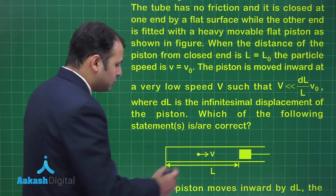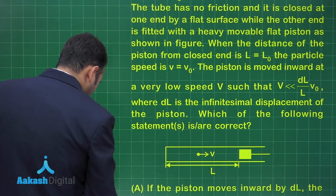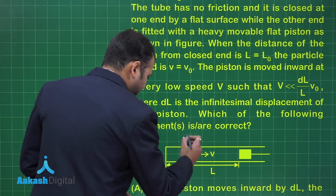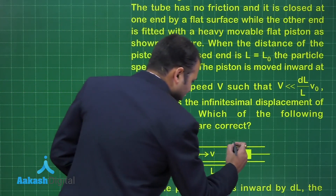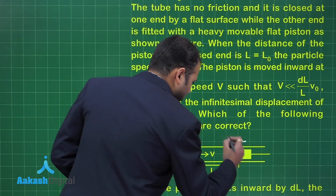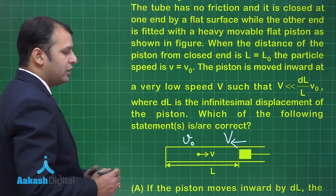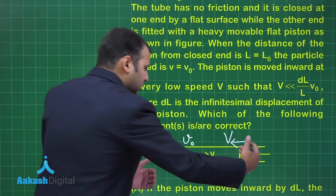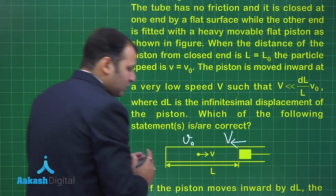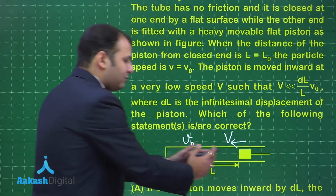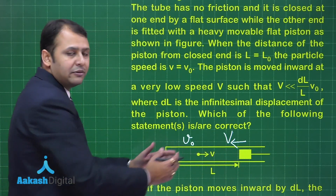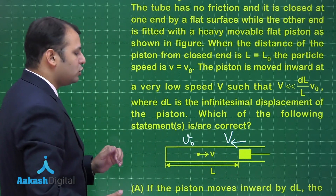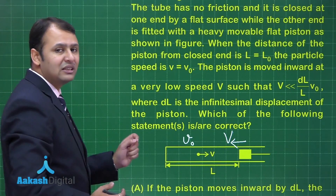As you can see, this is the tube, this is the particle we are talking about. Initially the velocity of the particle was V₀, and the velocity of the piston is constant capital V. With time, the piston will keep moving inside and the particle will keep colliding with the two ends again and again. We need to find which of the following statements is correct.